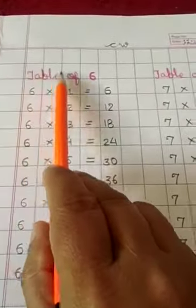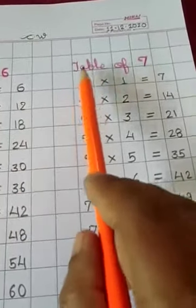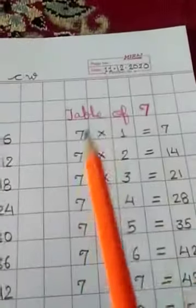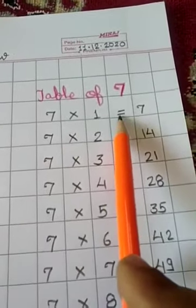Now, in same line, leave this 3 box or 2 box and write here table of 7. Leave this 2 boxes and from here write table of 7. This is your multiplication sign and this is your equals to sign.